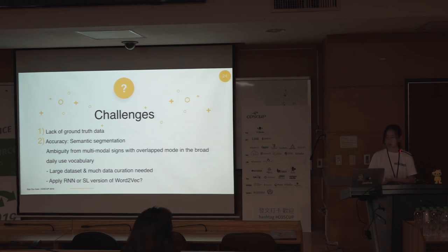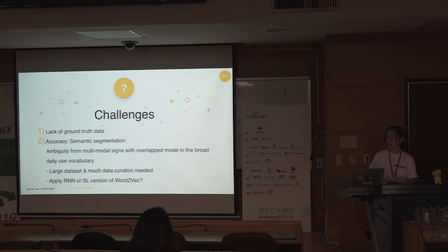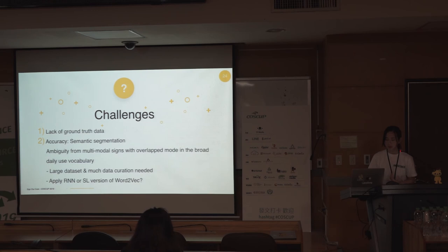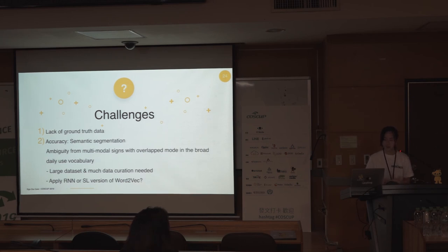When pointing a camera at someone, some signs involve movement, so we will face problems of semantic segmentation, multimodal signs, and overlap — as I mentioned before. A large dataset will be needed. For the segmentation problem, once we get more sophisticated, we can apply RNN and perhaps something like retrofitting to solve it.